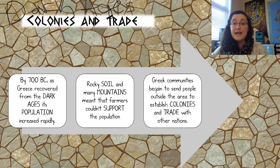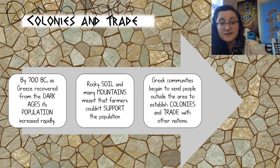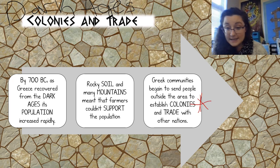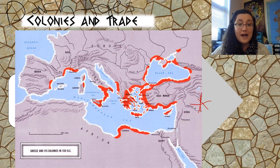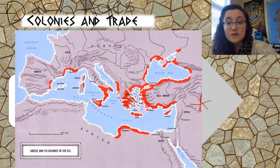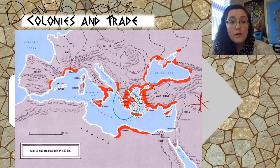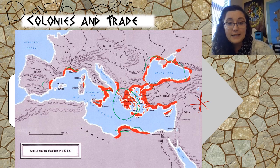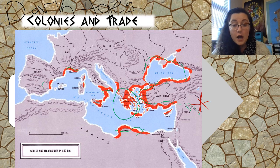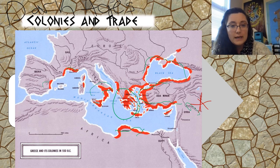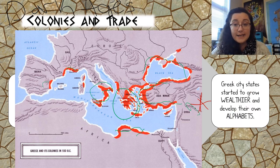Greek communities began to send people outside the area to establish colonies and trade with other nations. Put a star by the word 'colonies' — it means going to settle in other places. By about 550 BC, the red areas on the map show where Greece had colonies: all around the Black Sea, around Turkey, the island of Cyprus, close to Egypt, down into the Fertile Crescent near the Euphrates River, and even into Italy. Greek language and influence spread across all of these areas.